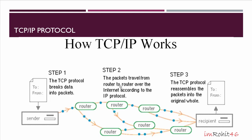In step 2, the packets travel from router to router over the internet according to the IP protocol. In step 3, TCP is responsible for reassembling all the packets at the recipient side. That's how the file transmits from sender to receiver.